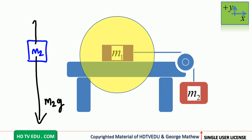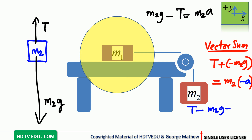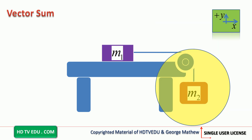The net force on mass m2 is vertically downward, so the downward arrow is bigger than the upward tension arrow. The equation of motion is: m2g minus T equals m2a. Verifying with the vector sum: T acts up (positive), m2g acts down (negative), acceleration is down, giving T minus m2g equals negative m2a. Multiplying throughout by negative one gives m2g minus T equals m2a — the same result.